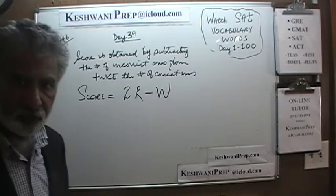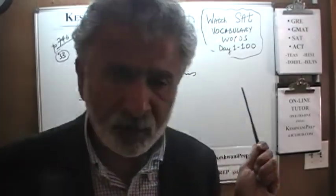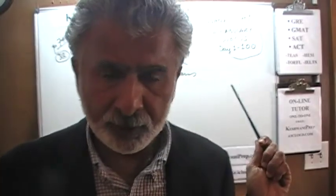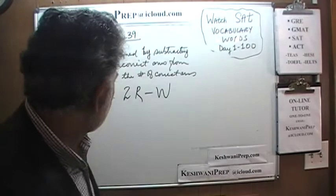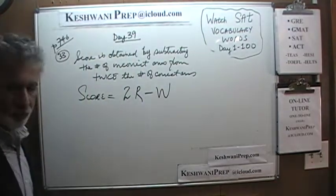Instead of making it complicated, think in a very straightforward way. It's a game where if you are right, you get two points; if you are wrong, you lose a point. That's all it is. If I am right, I get two points; if I am wrong, a point is taken away. That's the score.